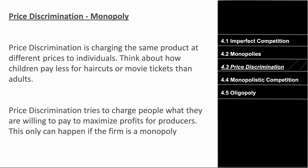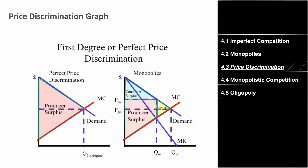Price discrimination is charging different prices for the same product to different individuals. Think of how children pay less for haircuts, movie tickets, or how elderly or military veterans get cheaper car washes. Companies do this to maximize producer surplus — without price discrimination, you have consumer surplus, producer surplus, and deadweight loss.